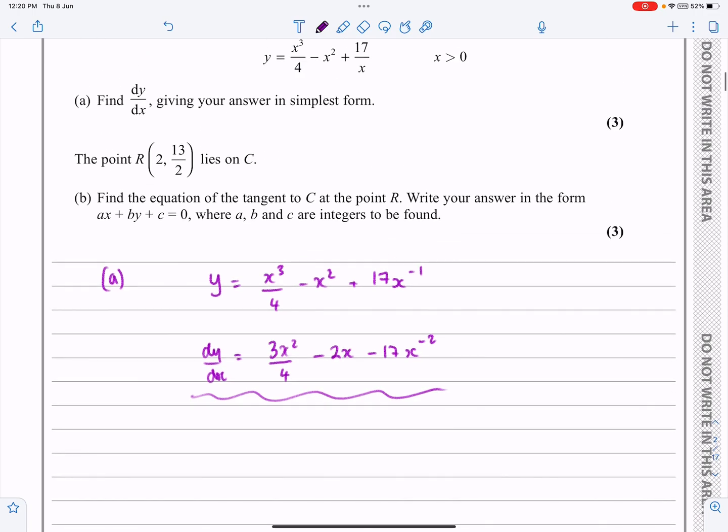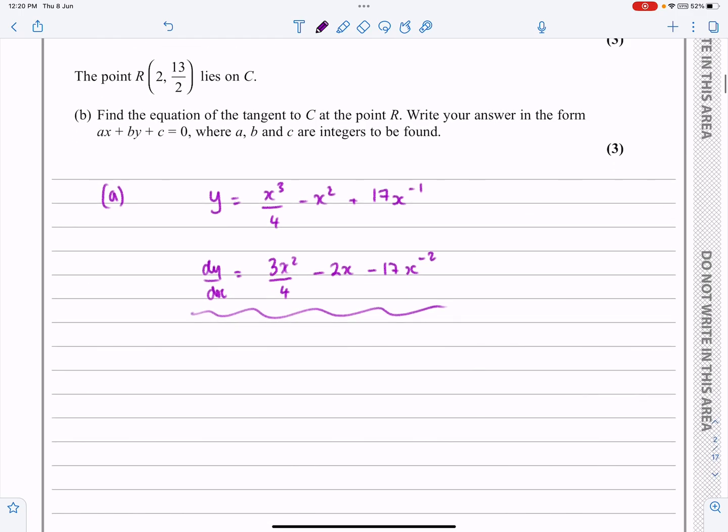It asks for it in its simplest form. That's already done. You don't need to change it back to 17 over x². I'm absolutely fine to have that for part A.